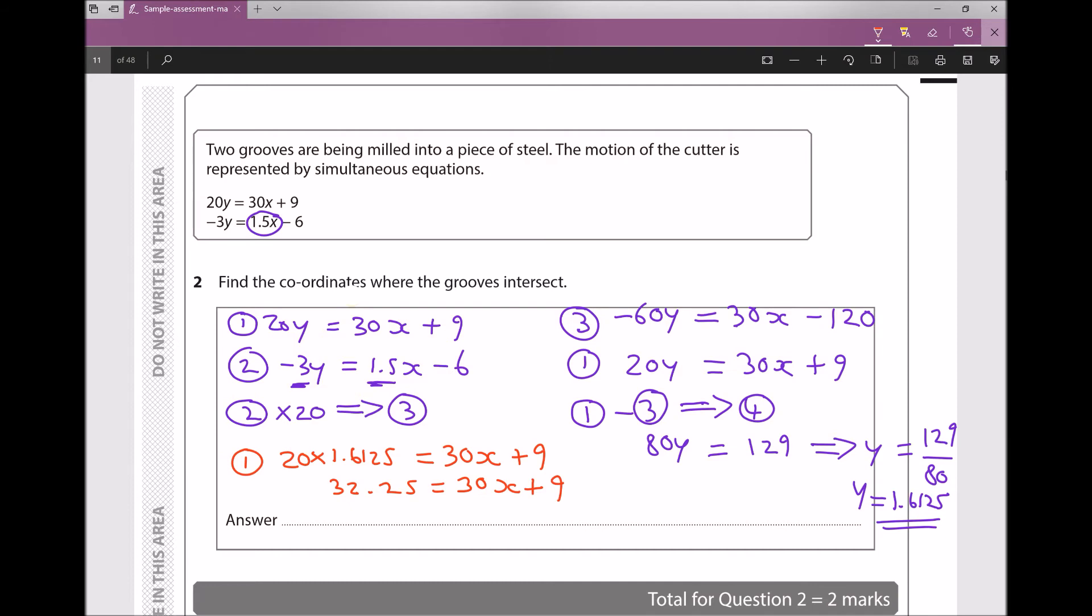Next, I'm going to minus 9 from each side. And minusing 9 from each side will give me 30x = 23.25.